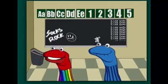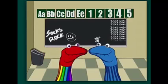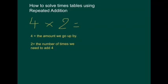So, how do we do this? Well, let's have a look. Let's try four times two. Well, the four tells us the amount that we need to go up by each time. The two tells us the number of times we need to add four. So, let's draw a number line first.